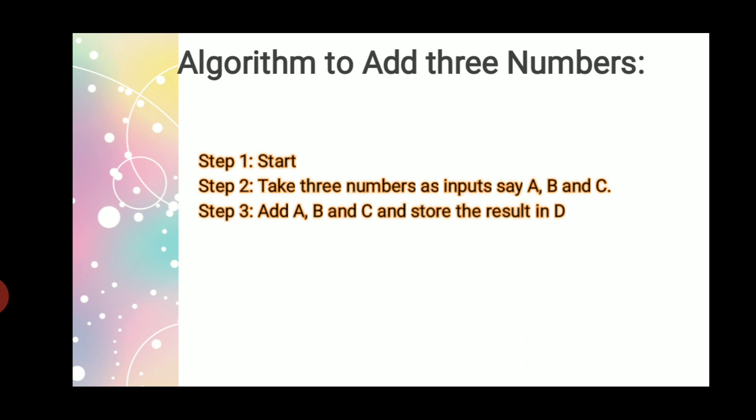After the addition, you have to store the result in D. D means you can choose any alphabet or any word, but you have to choose this because in computer everything is stored in memory. Third, you have to display it—show the output—and finally Stop. So there are five steps, but actually there are only three steps. The first and the last will be the same in all algorithms.